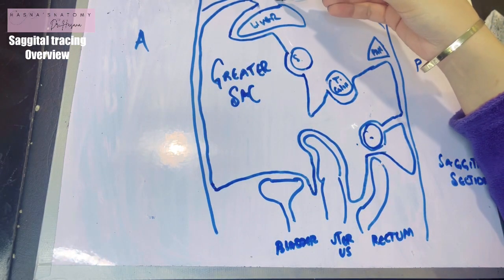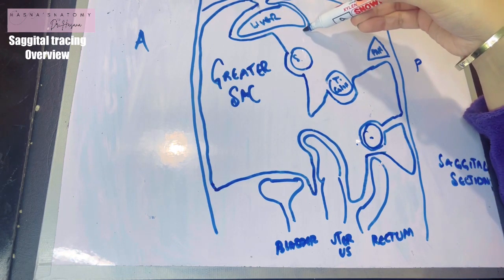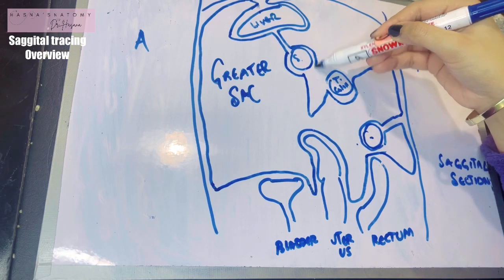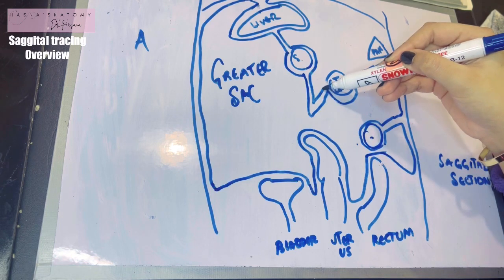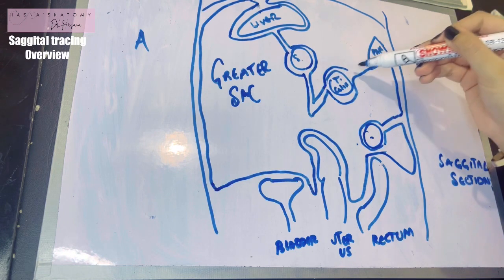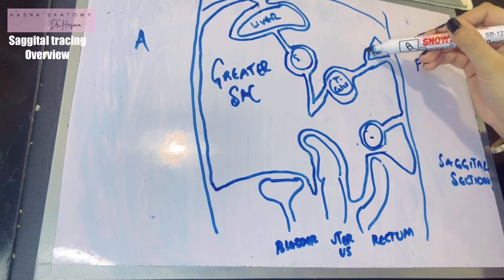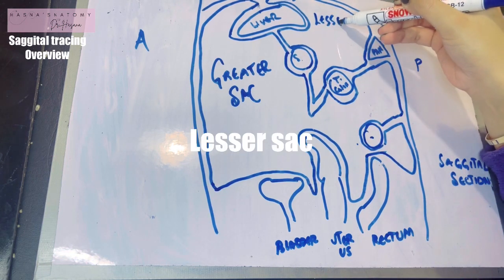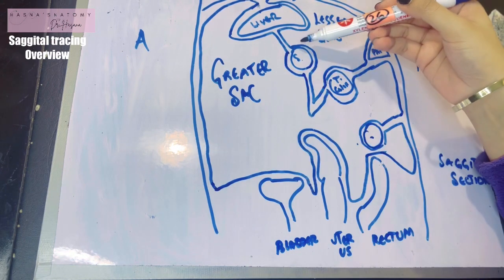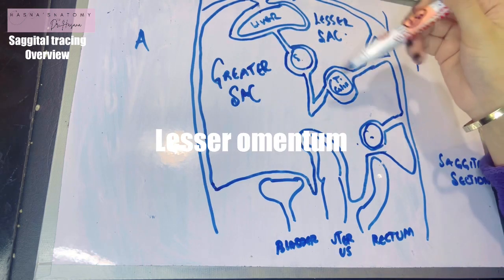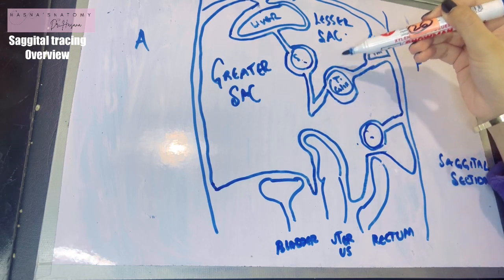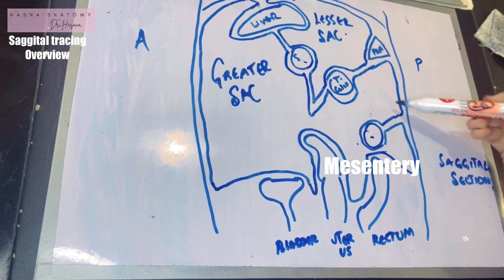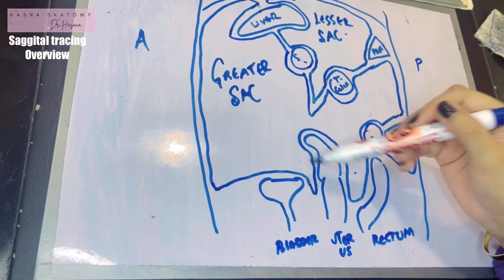Now let's talk about the lesser sac. Beginning a reflection of peritoneum from behind — from the liver — covering the liver and taking it down from the liver to the stomach. This fold of peritoneum becomes the lesser omentum. Cover the posterior surface of the stomach, and from the stomach this fold goes down and up again to the transverse colon, then lines the transverse colon. This is the transverse mesocolon, which is attached to the pancreas, and finally to the pancreas — completing a circle. The area just enclosed is the lesser sac.